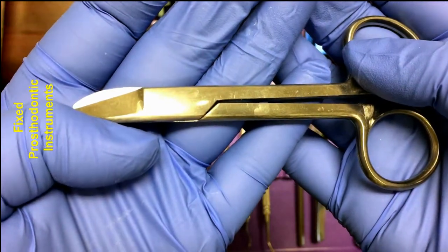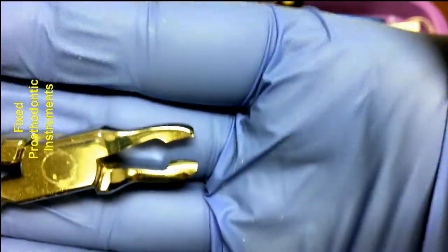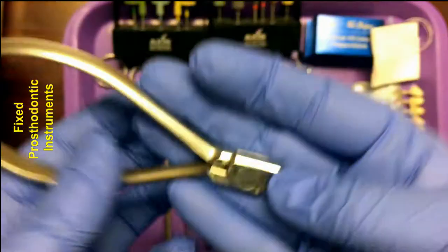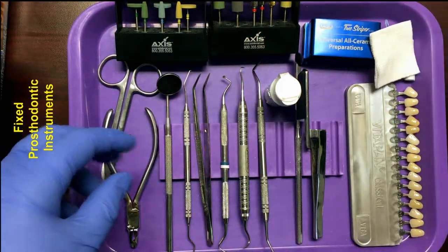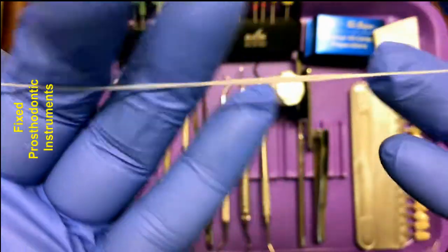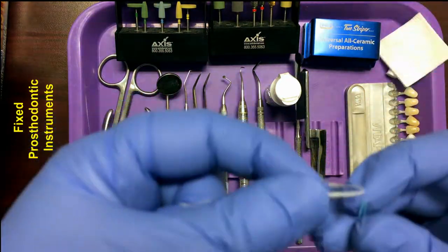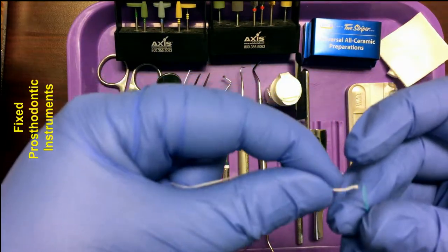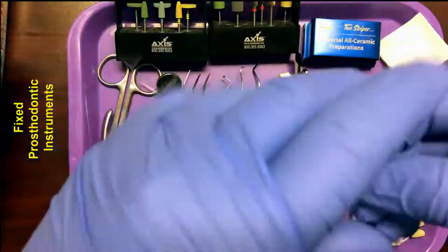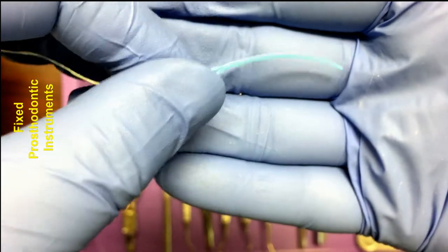We'll also have floss on your tray setup. Floss is used to check the contact areas of the teeth. If a patient is receiving a bridge, the floss may be used with a floss threader, which is similar to a needle and thread concept. If you've ever had braces, you may have used one of these. The floss threader can be pushed under the pontic of a bridge and the floss can be pulled through. By sweeping the floss back and forth under the pontic, it will clean out any debris. For fixed prosthodontics, you can use floss to check the contacts or to floss under a bridge. After cementation, you can use floss to remove interproximal cement pieces.